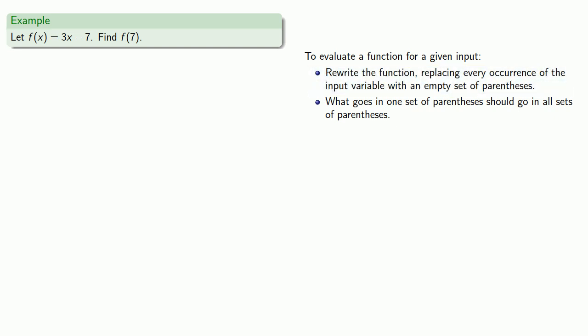So paper is cheap, so let's copy our function down first. And now we'll rewrite, dropping every occurrence of x and leaving behind an empty set of parentheses. So f of blank is equal to 3 blank minus 7.